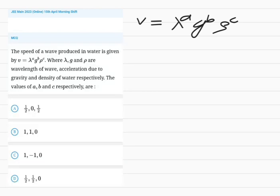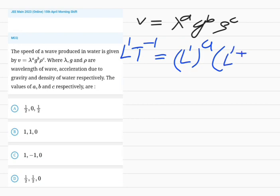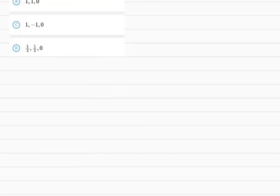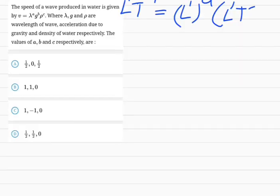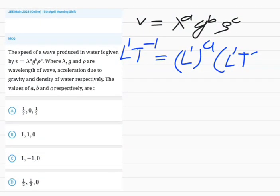Speed, that is L1 T-1, equals wavelength which is L1 to the power A. Gravitational acceleration, which is meter per second squared, is L1 T-2 to the power B. For density, that is mass by volume, so it is M1 L-3 to the power C.